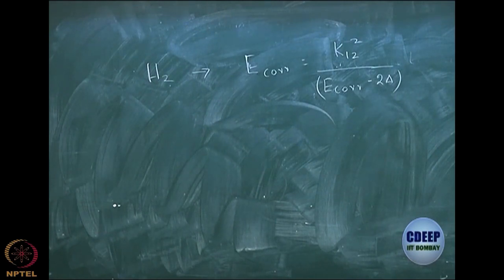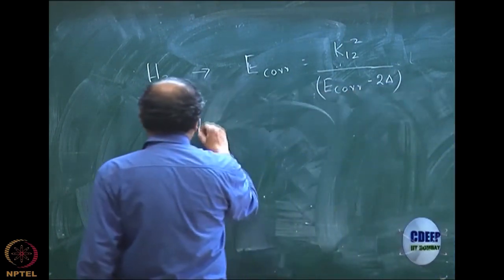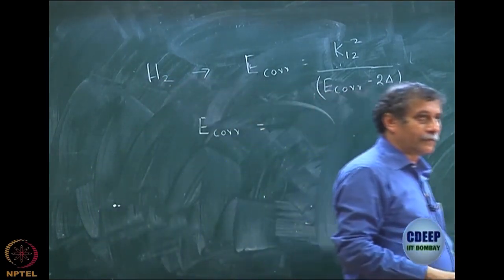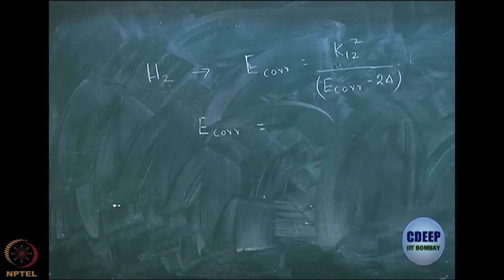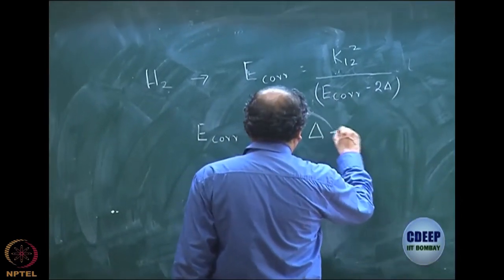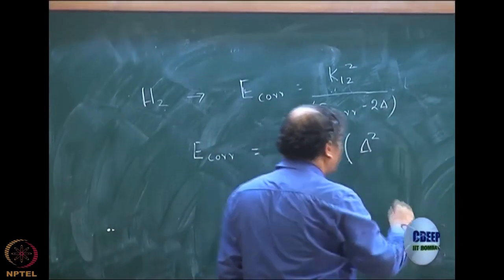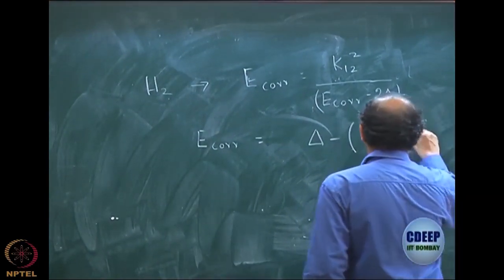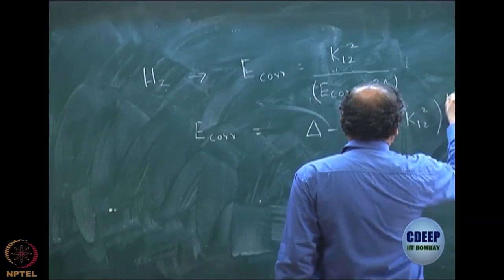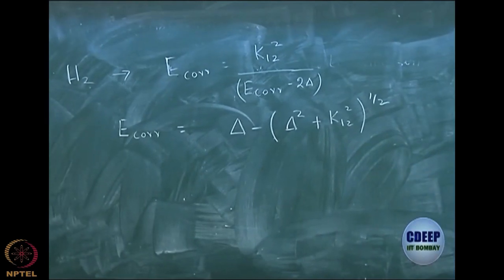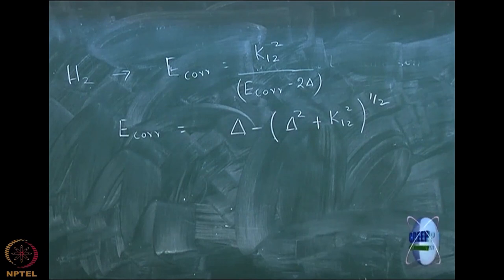I hope some of you have solved this equation. E correlation is equal to δ minus the square root of δ² plus k₁₂², to the power half. That is the result of the solution of the quadratic equation.